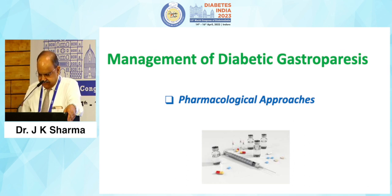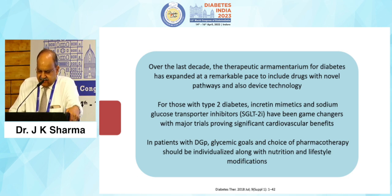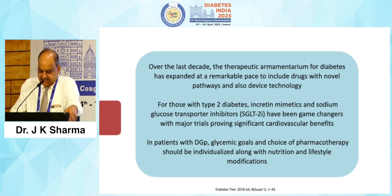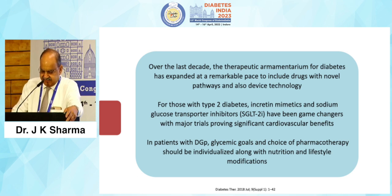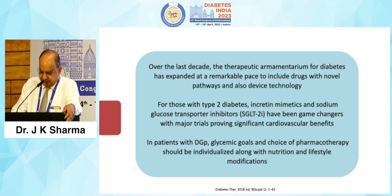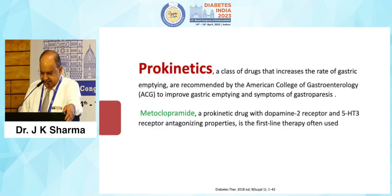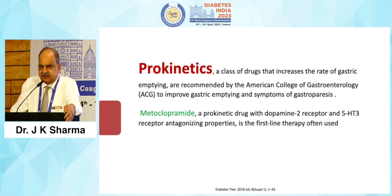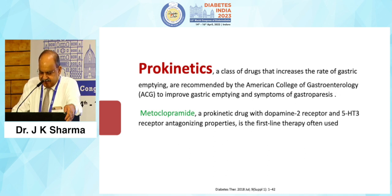For pharmacological approaches, the therapeutic armamentarium for diabetes has expanded remarkably over the last decade to include drugs with novel pathways and device technologies. For type 2 diabetes, incretin mimetics and SGLT2 inhibitors have been game-changers with major trials proving significant cardiovascular benefits. In patients with diabetic gastroparesis, glycemic goals and choice of pharmacotherapy should be individualized along with nutrition and lifestyle modifications. Prokinetics — a class of drugs that increase the rate of gastric emptying — are recommended by the American College of Gastroenterology to improve gastric emptying and symptoms of gastroparesis. Metoclopramide, a prokinetic drug with dopamine-2 receptor and 5-HT3 receptor antagonizing properties, is the first-line therapy often used.